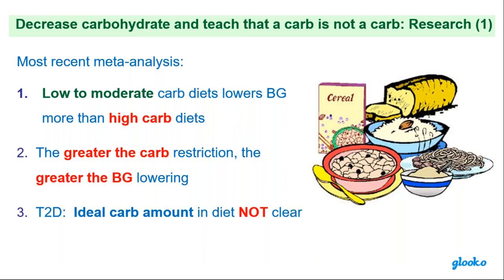Let's start with the D: Decrease carbohydrate and teach that a carb is not a carb. Let's look at what the very current research is showing us, especially meta-analysis research. A low to moderate carb diet does lower blood glucose more than high carb — pretty much all of you know that.